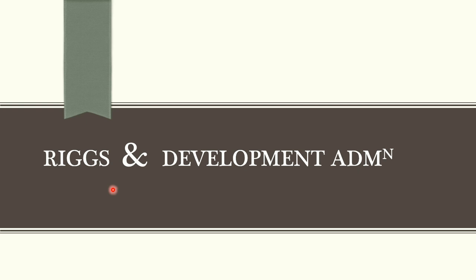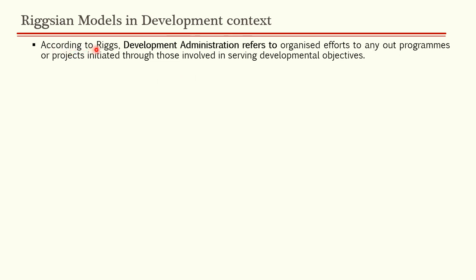Continuing with today's session — Riggs and development administration. According to Riggs, development administration refers to organized efforts to carry out programs or projects initiated through those involved in serving development objectives. So if you want to serve development objectives, and you create programs or projects to achieve that objective, that is development administration.